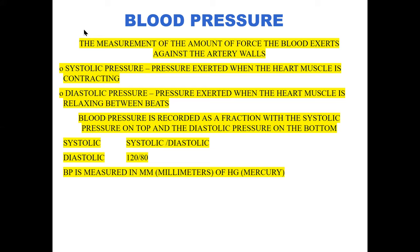We're going to continue talking about blood pressure and how that relates to our overall health. Last time we talked about how we have two numbers: your systolic blood pressure and your diastolic blood pressure. We write them as a fraction — systolic on top, diastolic on the bottom — measured in millimeters of mercury (mmHg). Using the normal 120 over 80, that gives us 40 mmHg difference.